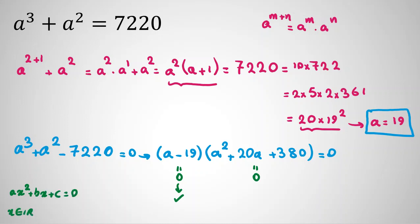That if we have ax squared plus bx plus c equals zero, if x is a real number, delta or discriminant, which is b squared minus 4ac, should be greater than or equal to zero. Here, delta or discriminant is 20 squared minus 4 times 380. We can factor out 20.